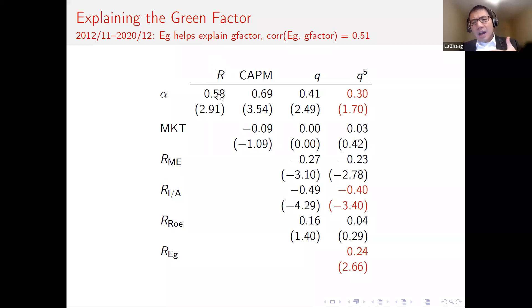The green factor average excess return or factor premium is 58 basis points per month and significant even within that relatively short sample. CAPM alpha is 69 basis points per month, but if you're looking at our Q-five factor regression, we only have 30 basis points per month. That economic magnitude is not exactly small and T value is only 1.7. I should acknowledge the sample is relatively short. That may have undercut the magnitude of T value.